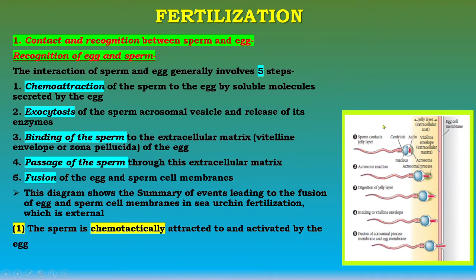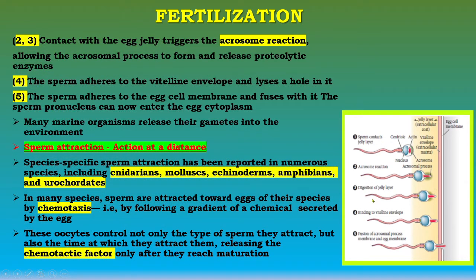In the first step, the sperm is chemotactically attracted to and activated by the egg. Contact with the egg jelly triggers the acrosome reaction, which permits the acrosomal process to form and release proteolytic enzymes. In the fourth step, the sperm adheres to the vitelline envelope and makes a hole in it. In the fifth step, the sperm adheres to the egg cell membrane and fuses with it, and the sperm pronucleus can now enter the egg cytoplasm. Many marine organisms release their gametes into the environment.